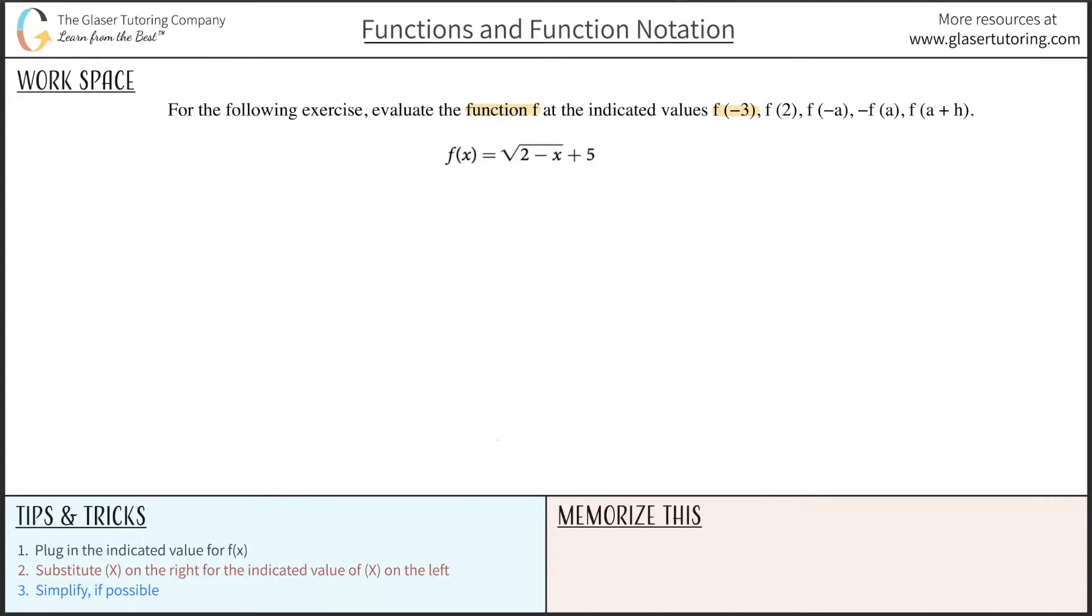Okay, so basically I can follow these three steps where I can take this f of negative 3, plug it in for f of x, and then everywhere I see x on the right-hand side, just plug in my indicated x value that they told me in the problem. And then just simplify. Fairly straightforward here. So let's do it in steps.